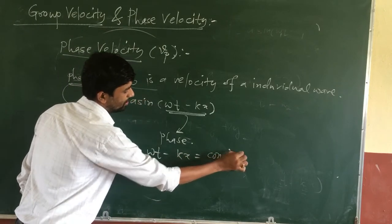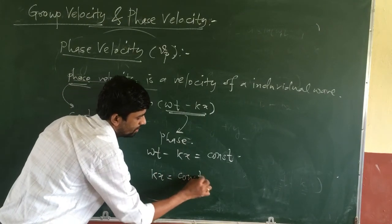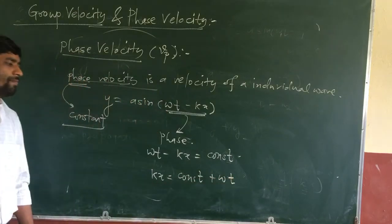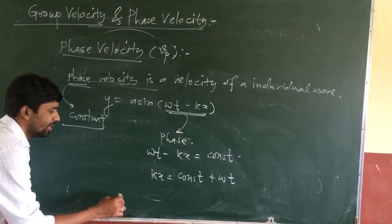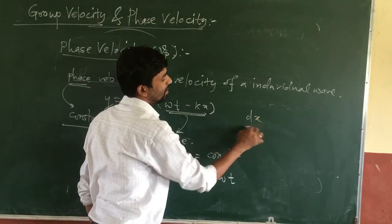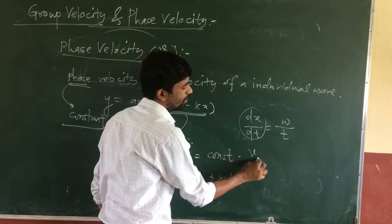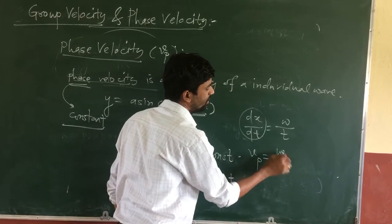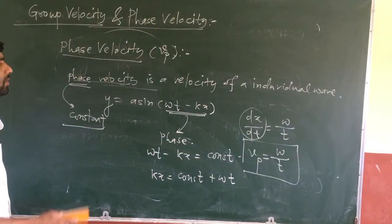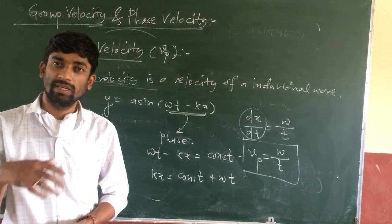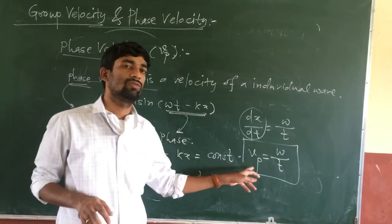The phase (ωt − kx) is constant. Rearranging gives kx = constant + ωt. Differentiating this equation, we get dx/dt = ω/k. Since dx/dt is velocity, this velocity is your phase velocity. So the relation for phase velocity is vp = ω/k. Group velocity is given by dω/dk and phase velocity is given by ω/k.